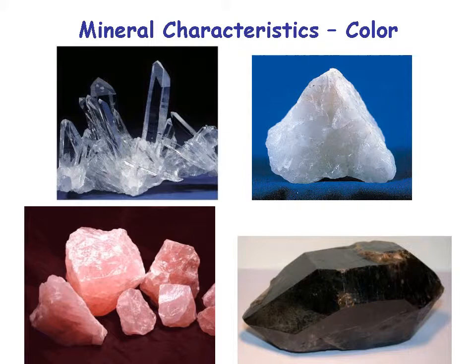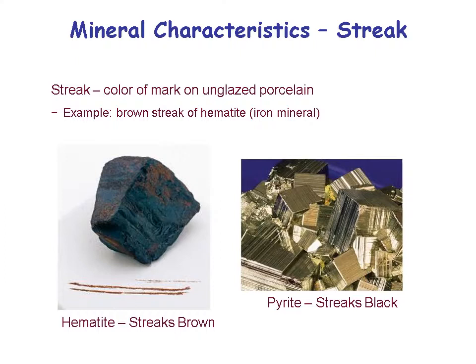Another characteristic is streak. You can take a mineral and rub it across a piece of porcelain like bathroom tile, and it will leave a streak. The mineral hematite can be red or gray in color, but when you streak it, it leaves a rusty brown color. Iron pyrite will streak black — so you know it's not gold, because gold will streak gold.